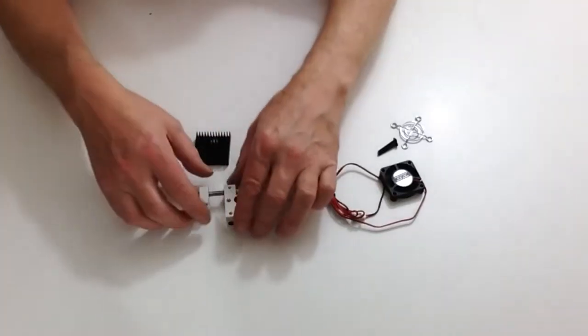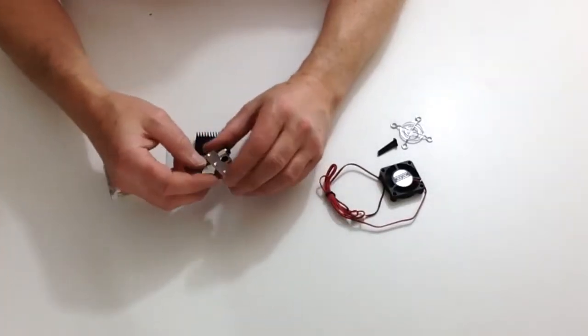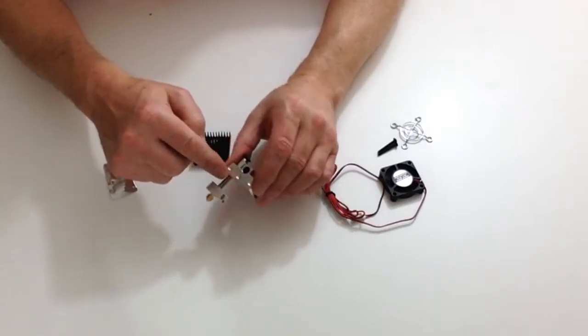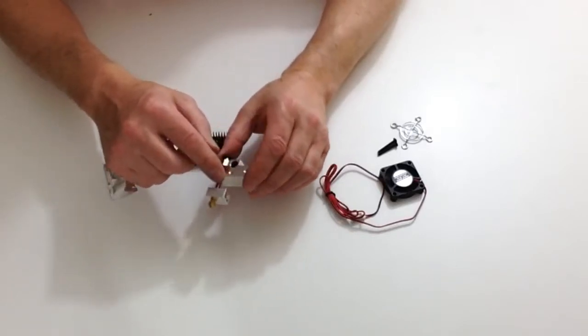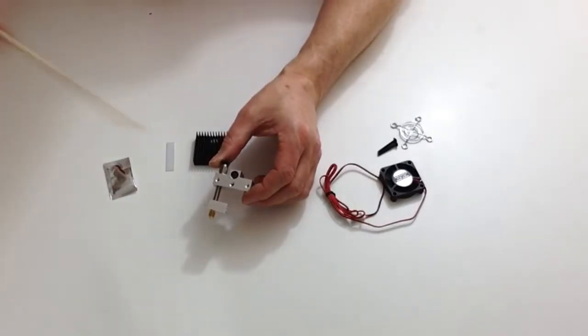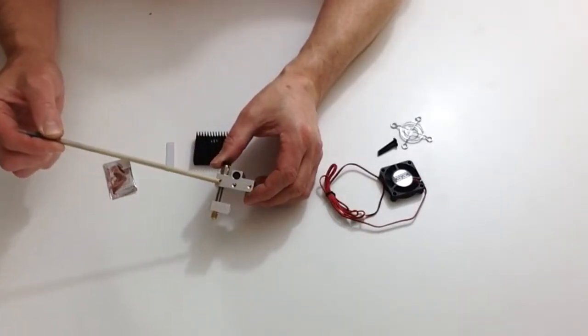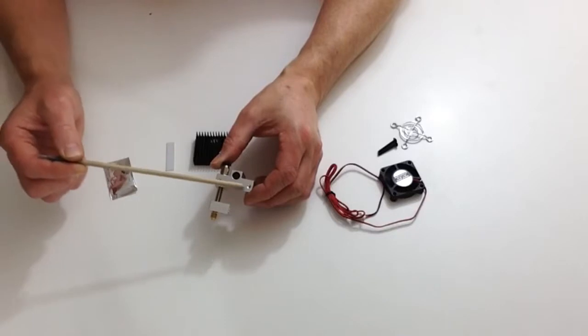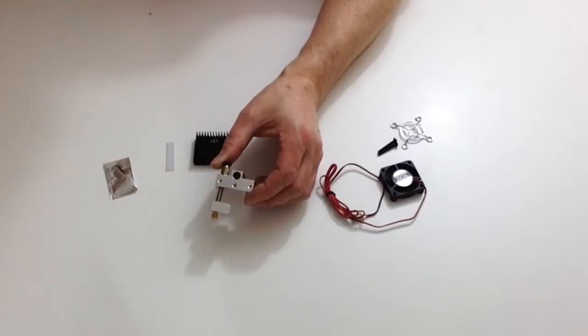First thing that we need to do is apply some grease to the heat block along this section here where the three holes are, making sure that we don't get any grease into where the three holes are.